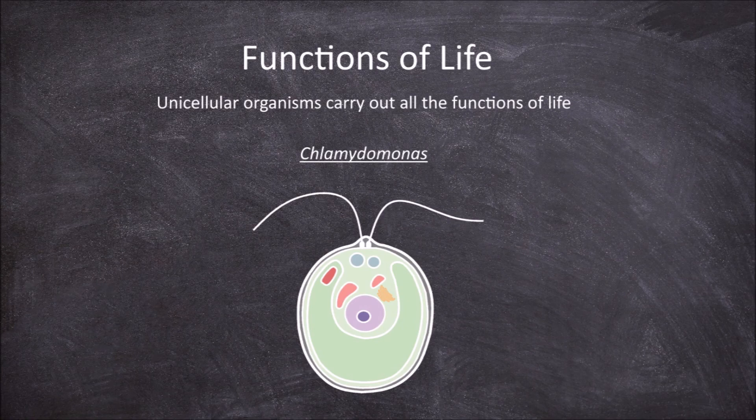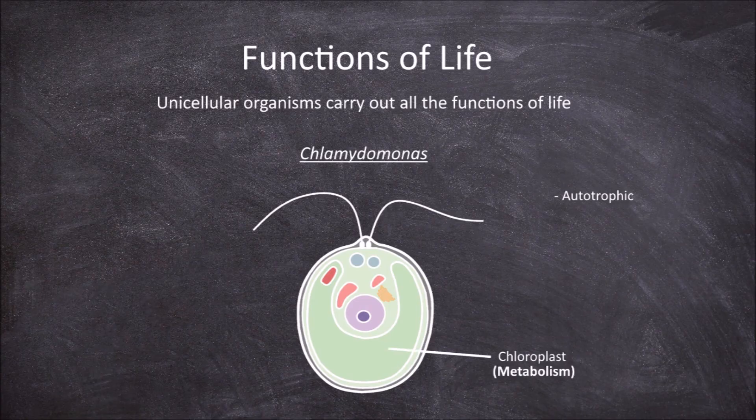Chlamydomonas is an example of a unicellular autotroph — a single-celled photosynthetic organism that is able to carry out all the functions of life. Chlamydomonas have chlorophyll pigments within the chloroplast that produce organic molecules, specifically sugars, through the chemical reactions involved in photosynthesis.